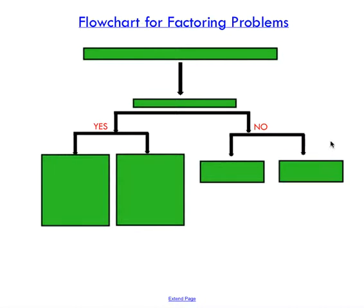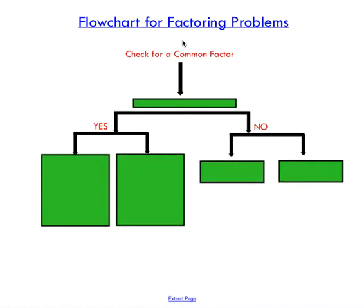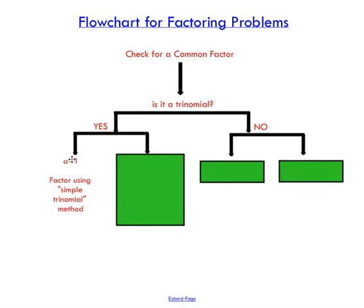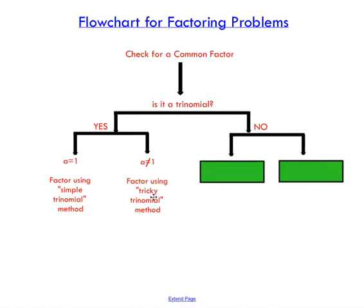I'm going to go over a nice little flowchart I've developed for factoring problems — this is the line of thinking you want to use when you approach a factoring problem. The first question to ask yourself is: is there a common factor in the expression? If there is, always remove it first. Once you've removed your common factor, the next thing to ask is: is it a trinomial? If you do have a trinomial — which has three terms — check if your a value, the coefficient in front of x², is equal to one. If so, use the simple trinomial method; if not, use the tricky trinomial method.